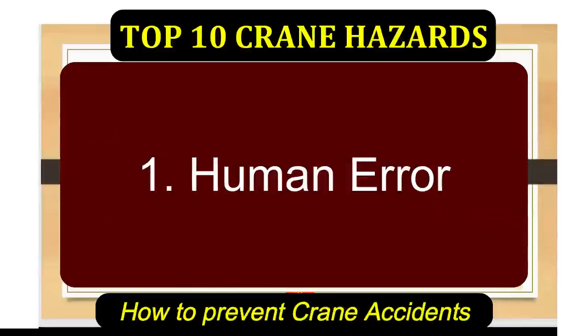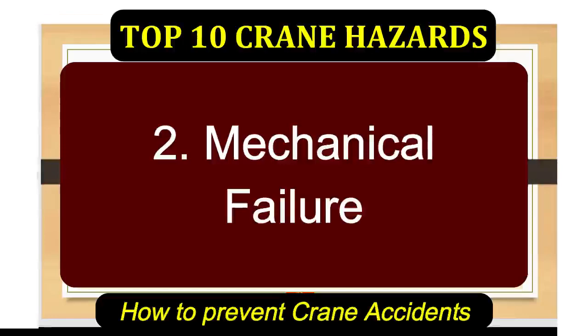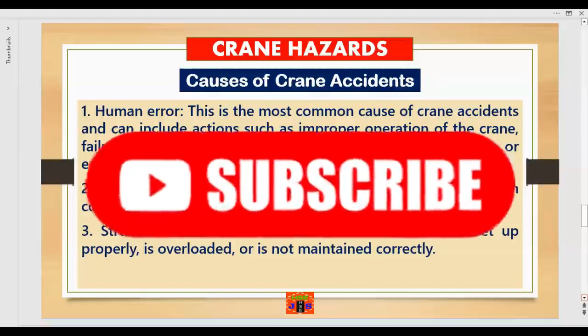Human error is the most common cause of crane accidents and can include actions such as improper operation of the crane, failure to follow safety protocols, or inadequate training or experience. If you investigate a crane accident, 90% of the time you will find only a single cause of the crane collapse, crane failure, crane incident, or crane overturning — and that is human error.